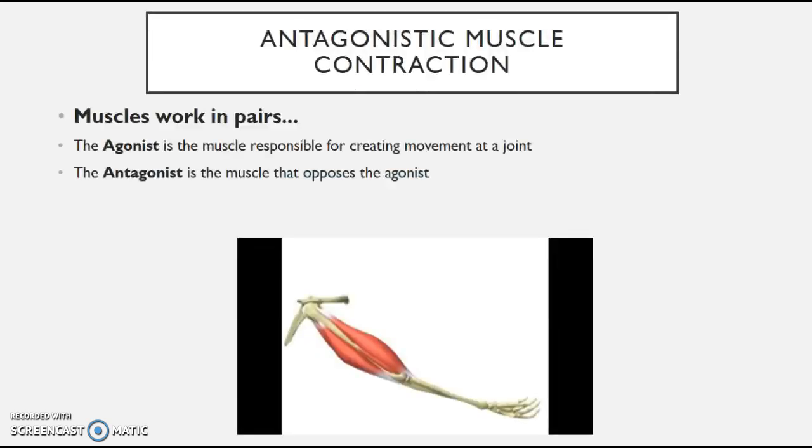First thing then, muscles work in pairs. This is a key point. Antagonistic muscle contraction refers to the concept of muscles working in twos. If you look at the key terms to start with, you've got the agonist. The agonist is the muscle responsible for creating a movement. And I always think with this, the best way to remember this is it's the muscle during a movement that's in agony. It's the agonist, it's in agony.